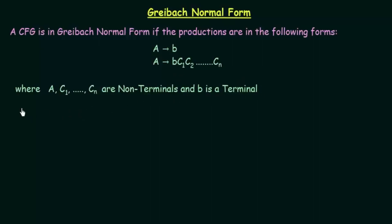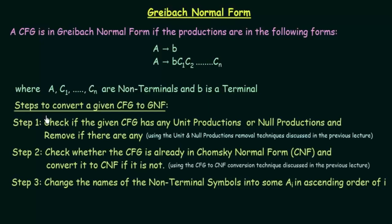Now we shall see the steps needed to convert a given CFG to its equivalent Greibach Normal Form. Step number one: check if the given CFG has unit productions or null productions and remove them if there are any. If you don't know what these are, please watch the previous videos where I have discussed unit productions, null productions, and how to remove them.